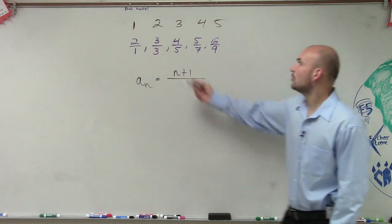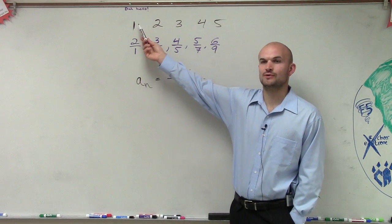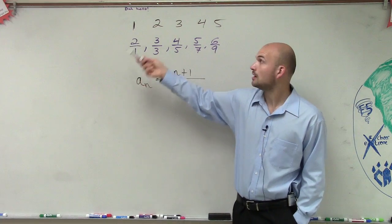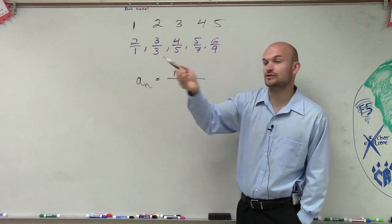OK. So let's go and look at the denominator. What do I have to do from, if here's my first term, what would I have to do to get to 1? Well, I could do nothing, right? But the 2 to go does not give you 2. So yes, Bernie?